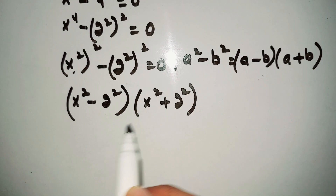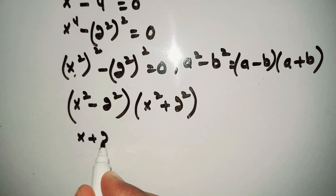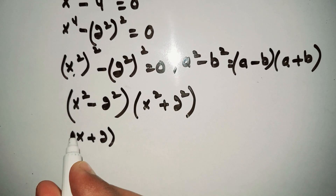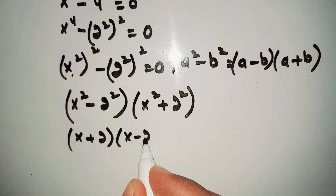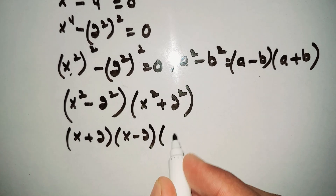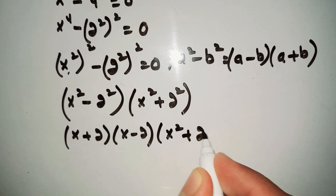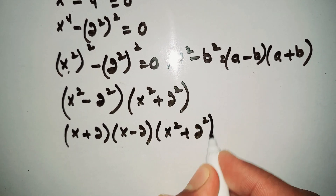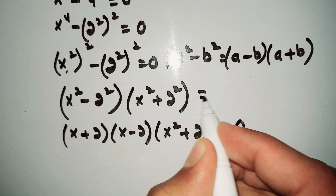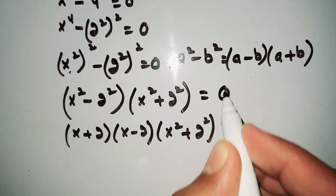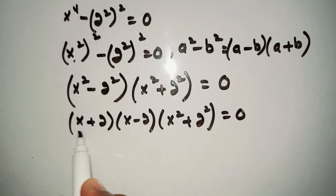Now for the factor x² - 2², we apply the difference of squares formula again, giving us (x + 2)(x - 2). The full factored form is (x + 2)(x - 2)(x² + 4) = 0.